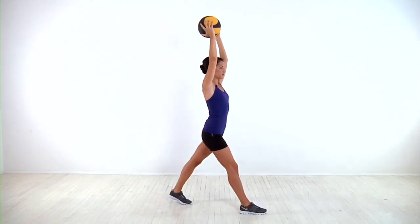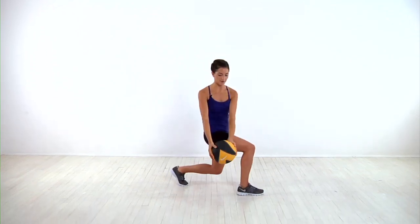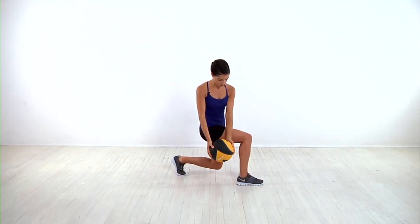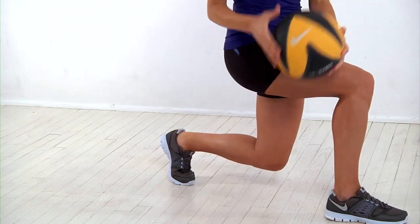step forward with your right foot and lower into a lunge, bringing the ball down outside your right thigh. You want to make sure here that you have nice 90 degree angles in both your knees.